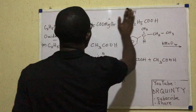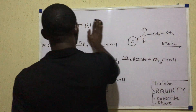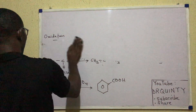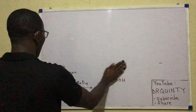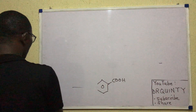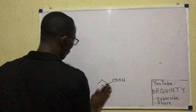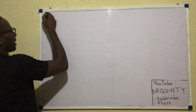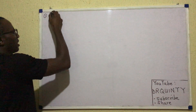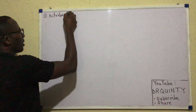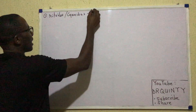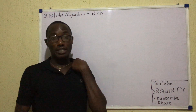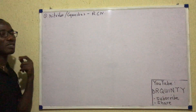Now let's talk about hydrolytic reactions that can give rise to carboxylic acids. The first thing we can hydrolyze to get alkanoic acids is nitriles. Nitriles are cyanides — compounds of formula RCN. When RCN undergoes hydrolysis, it becomes RCOOH.